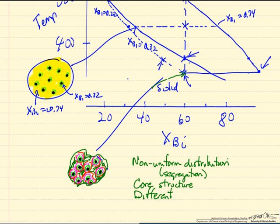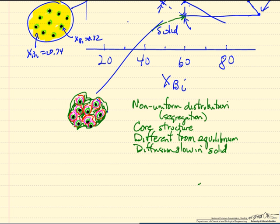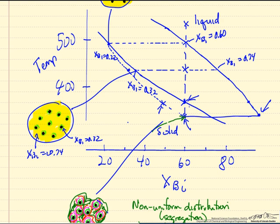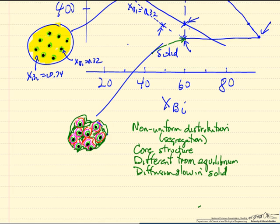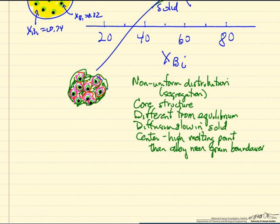We have this core structure quite different from the equilibrium composition. At equilibrium, these regions would be of uniform composition, but they're not because diffusion is slow. We assume diffusion is fast enough in the liquid that we maintain the liquid composition because diffusion is much faster in the liquid. But diffusion is slower in the solid, so our overall composition is going to be different from what we expect from the equilibrium phase diagram.